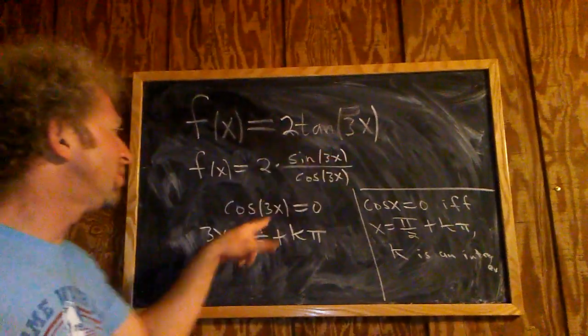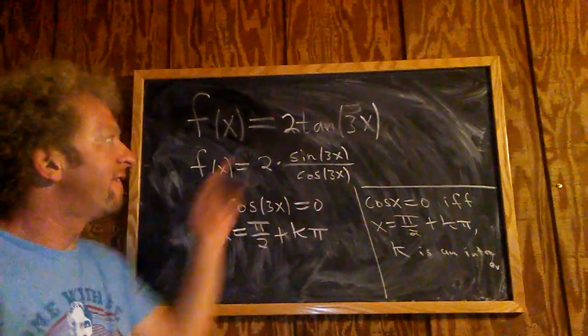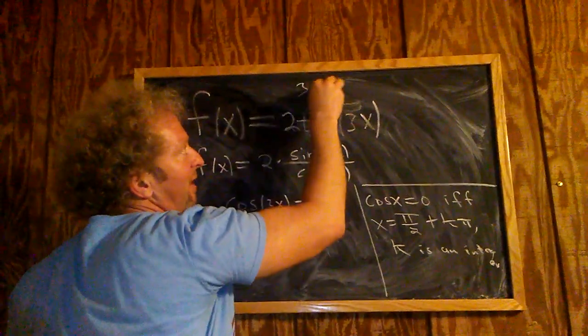If you had 7x here, you would just set 7x equal to this. If I had 3—here's a 2 by the way.